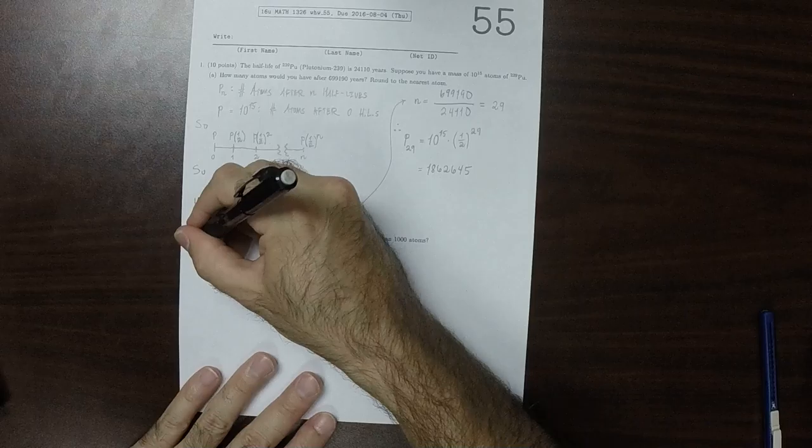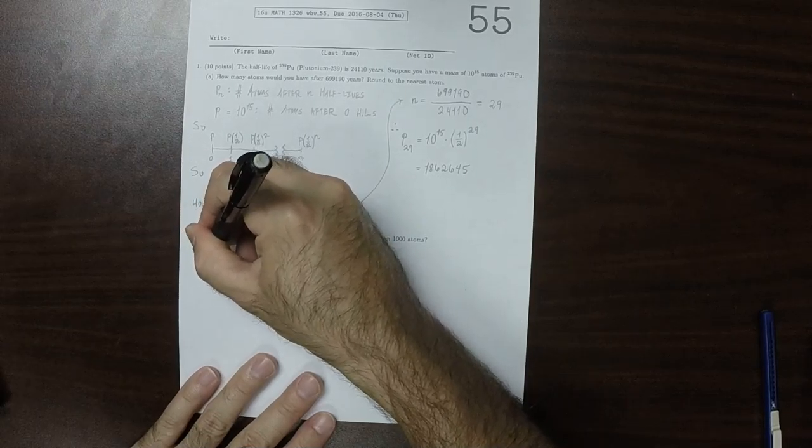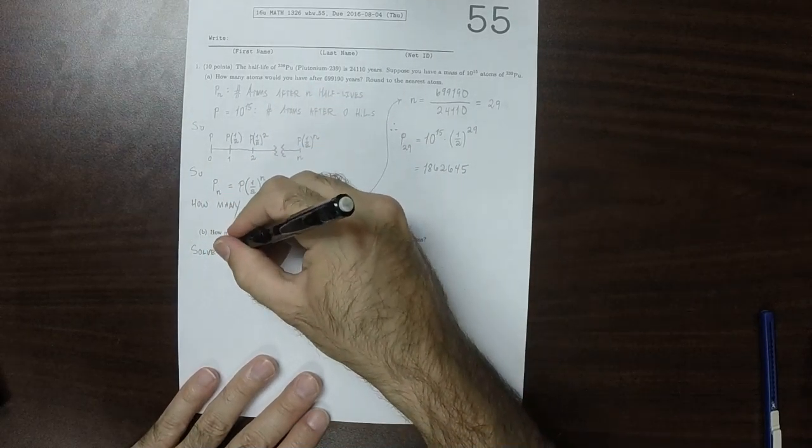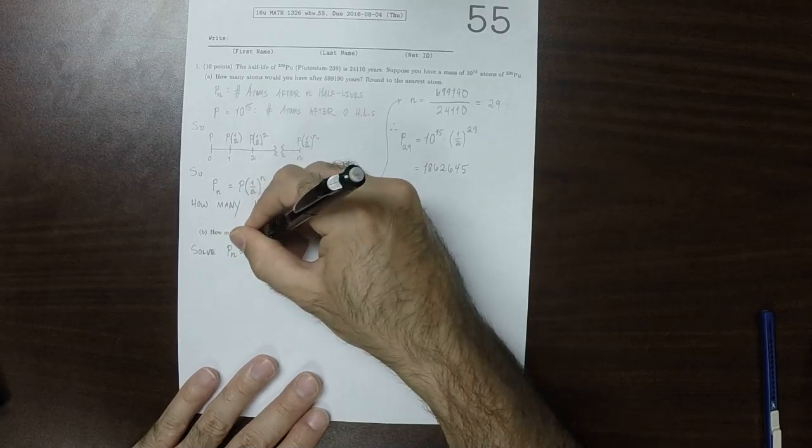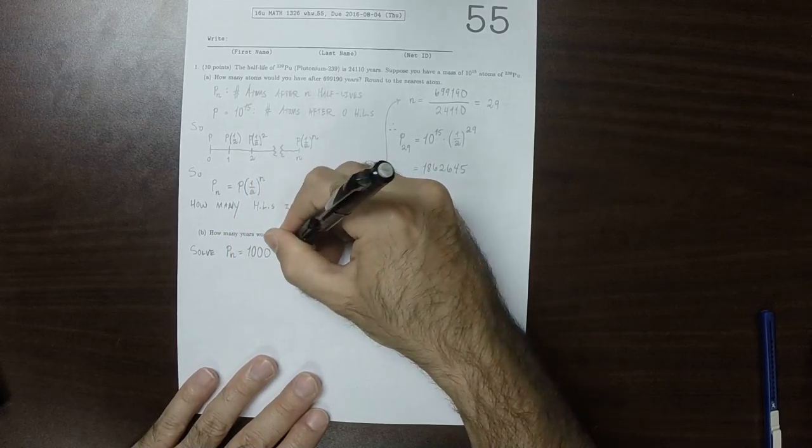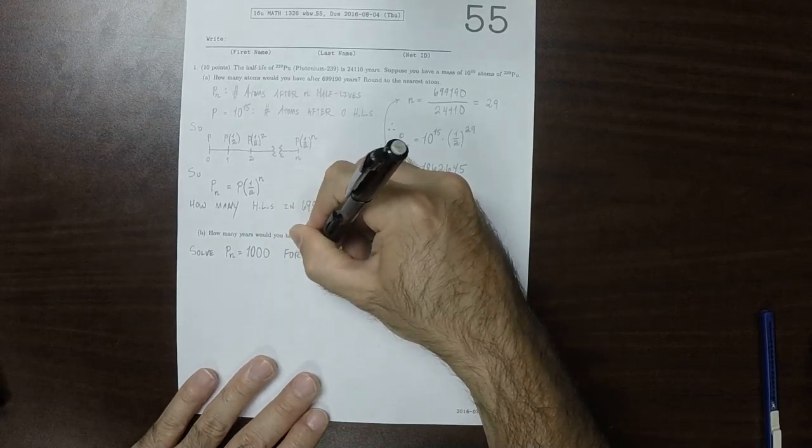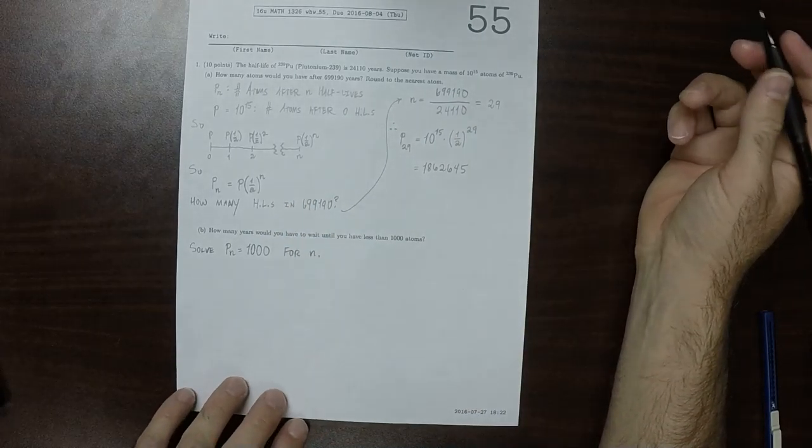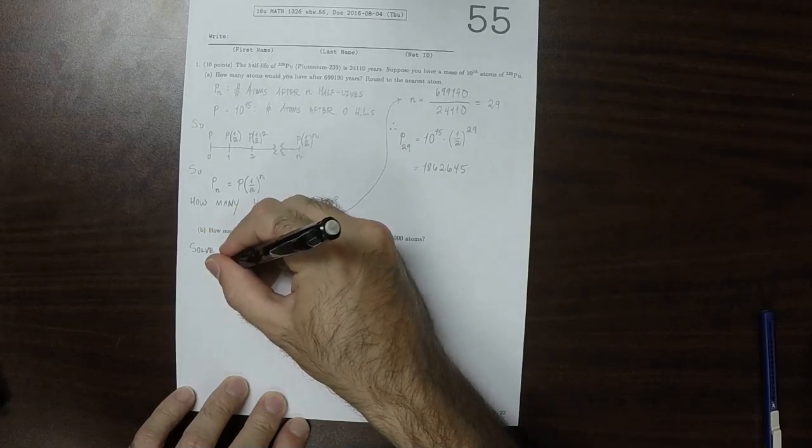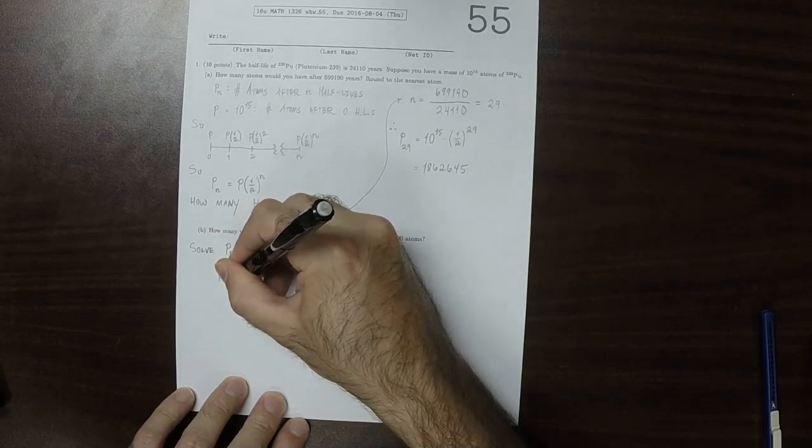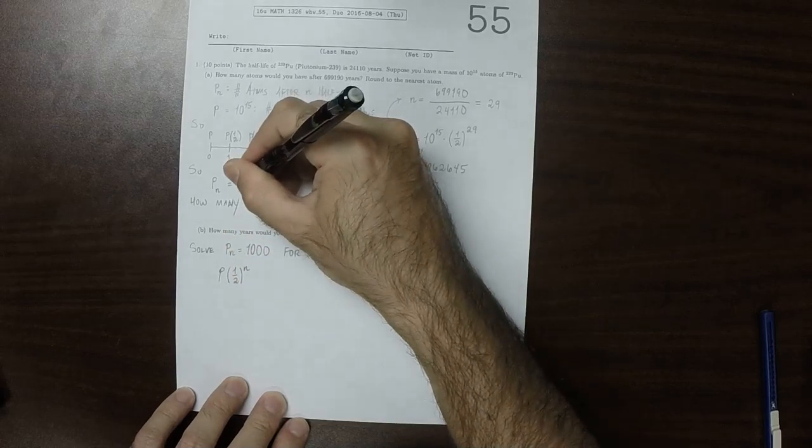Okay, so how many years would you have to wait until you have less than a thousand atoms? Using the same model, what we're essentially doing is we want to solve PN equals 1000 for N.